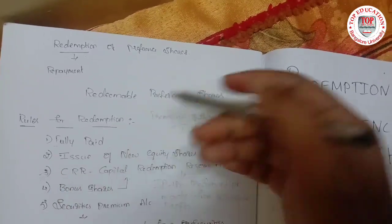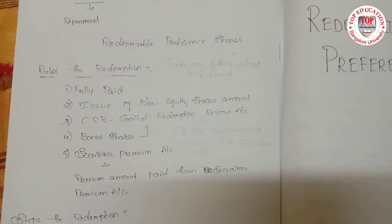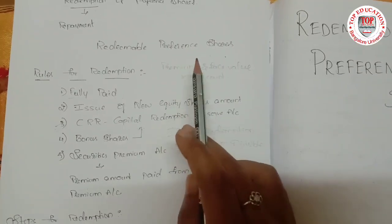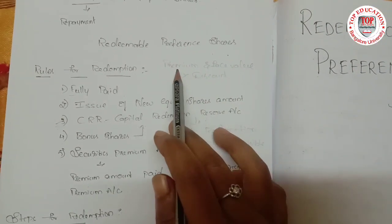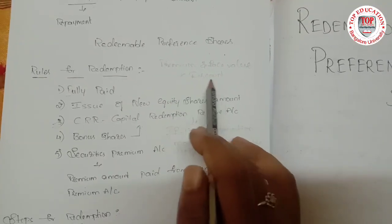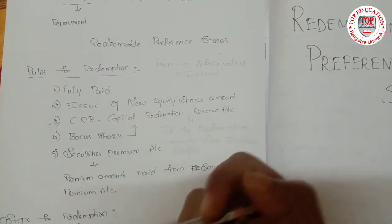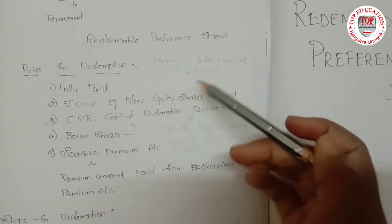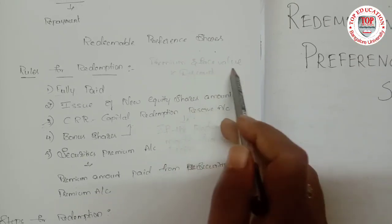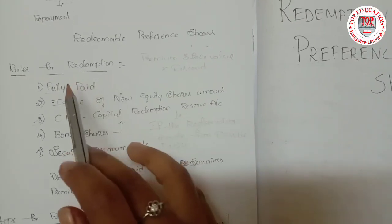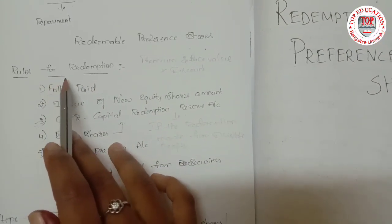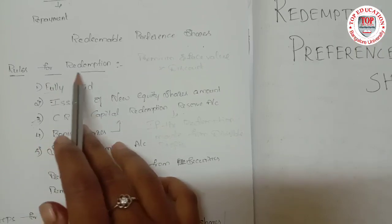First, preference shares can be redeemed at premium or face value, but not at a discount. We cannot repay the preference shares in the form of a discount; we can only repay them at premium or at face value of the shares. Here 'we' means the company.